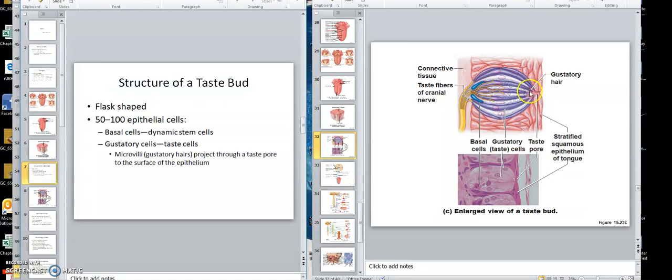Here's the nerves hooking to them there. Here's the basal cells there. The basal cells are dynamic stem cells. And then here's those gustatory cells right there. The actual taste cells.